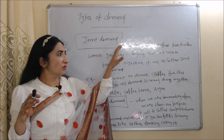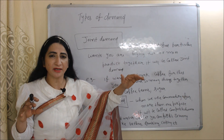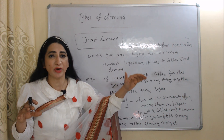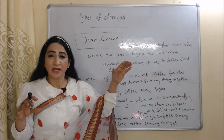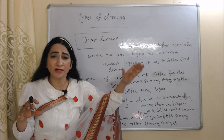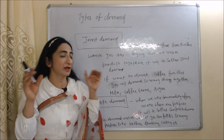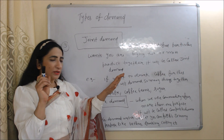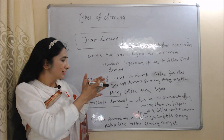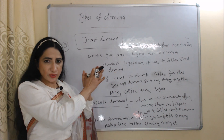Next is joint demand. In order to satisfy a particular want, if you demand two or more products together, it will be called joint demand. For example, you want to drink coffee — for this, you will demand so many things together like milk, coffee beans, and sugar. This will be called joint demand.